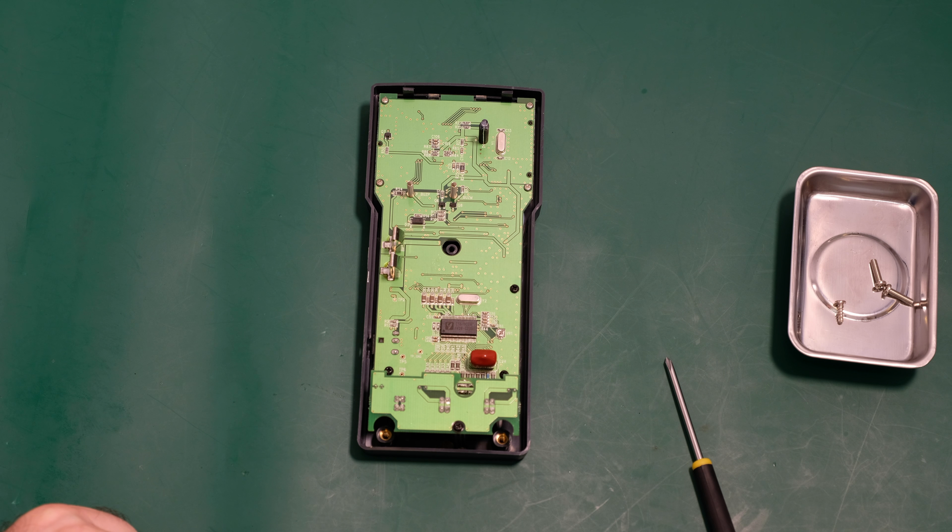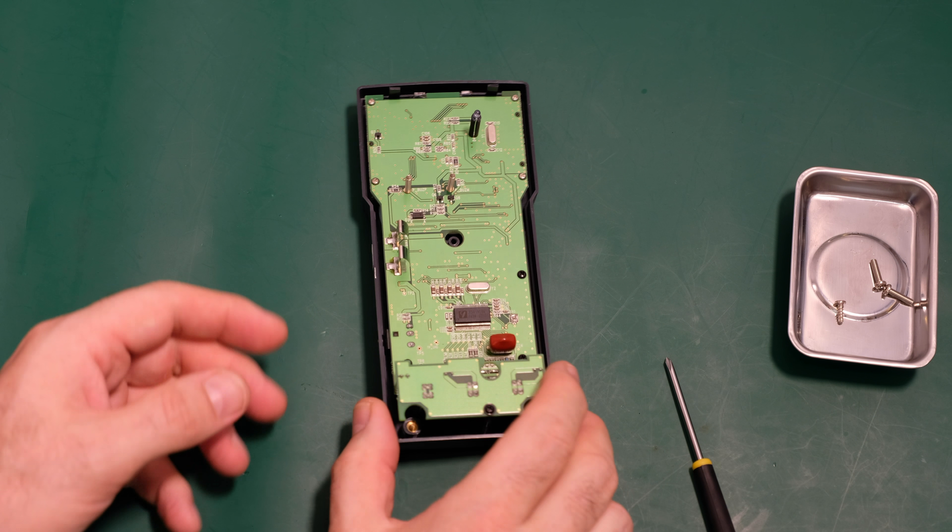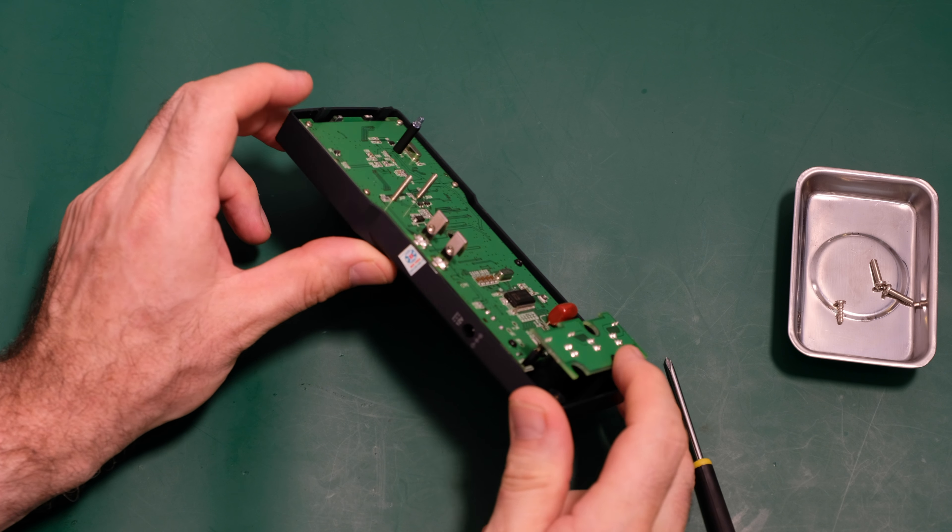So certainly a very sparse board. Very little on there. So what we'll do, we'll carry on, take this board out. So we do have two boards. We have a board here for the jack connections. That just appears to have one screw.